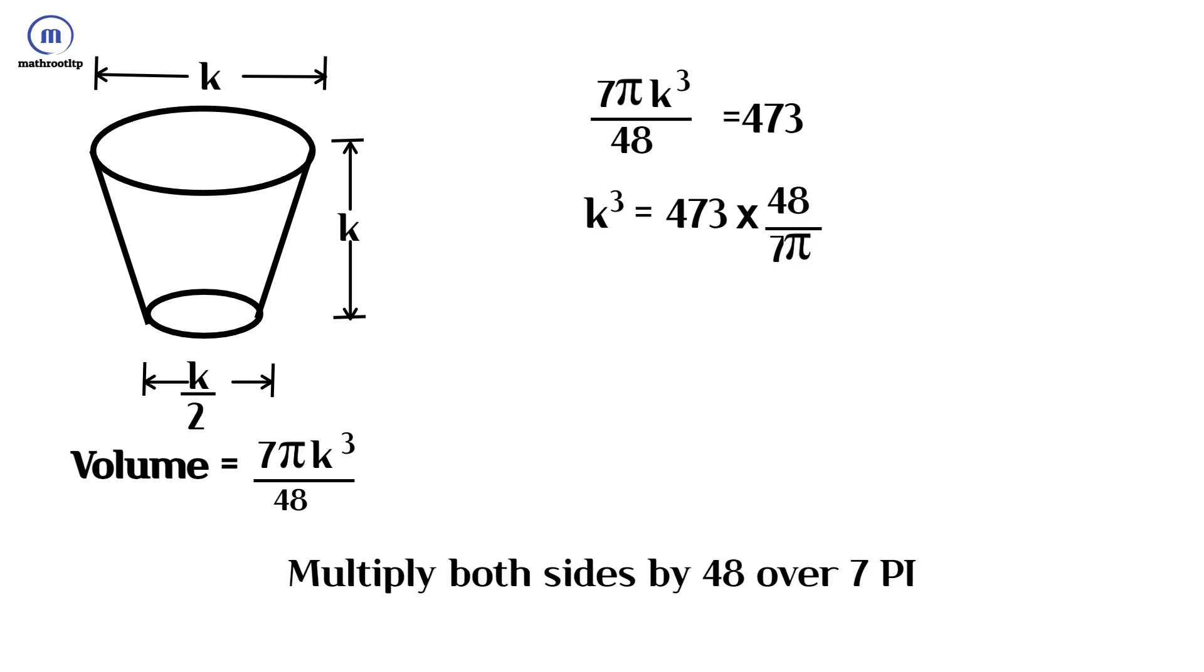Multiply both sides by 48 over 7 pi, so I can get rid of the fraction on the left side.